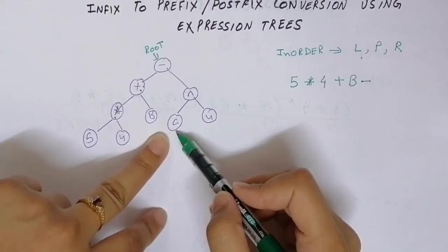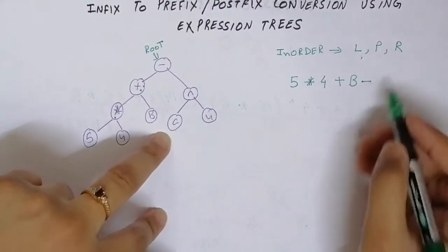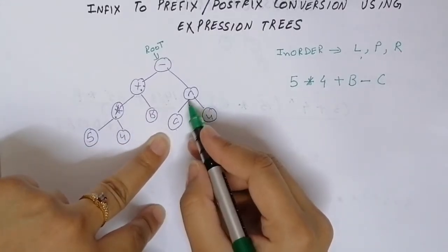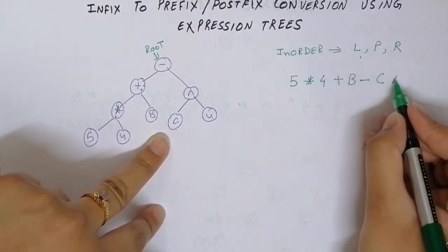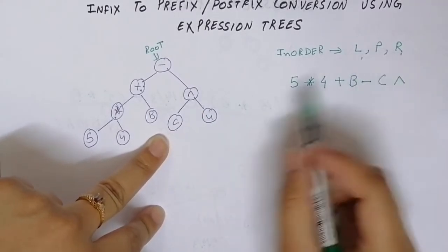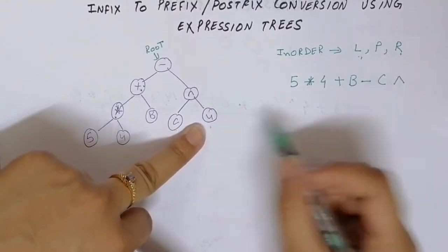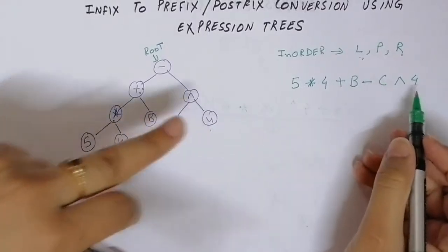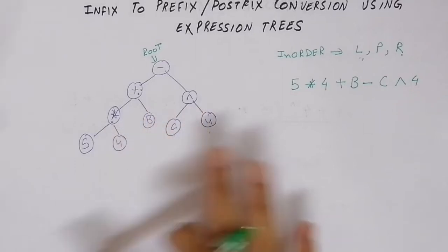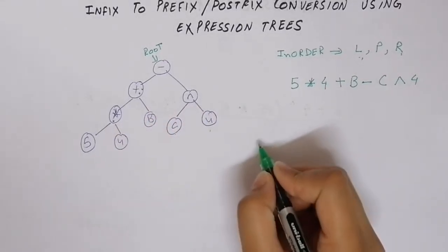Minus prints itself and calls the right subtree which is power. Power recursively goes to its left, which is C. Since C's left is null, it prints itself and looks for the right subtree, which is null, so it returns. Power then calls its right subtree which is 4. Four's left and right subtrees are null, so it prints 4. This is how we convert the expression tree to infix notation.